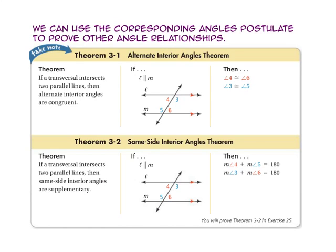We can use the Corresponding Angles Postulate to prove other angle relationships. Theorem 3-1, the Alternate Interior Angles Theorem, states that if a transversal intersects two parallel lines, then alternate interior angles are congruent. Since angle 3 and angle 5 are alternate interior angles, they are congruent. The Same Side Interior Angles Theorem states that if a transversal intersects two parallel lines, then the same side interior angles are supplementary. Since angle 3 and angle 6 are same side interior angles, the measure of angle 3 plus the measure of angle 6 equals 180. Similarly, the measure of angle 4 plus the measure of angle 5 equals 180.